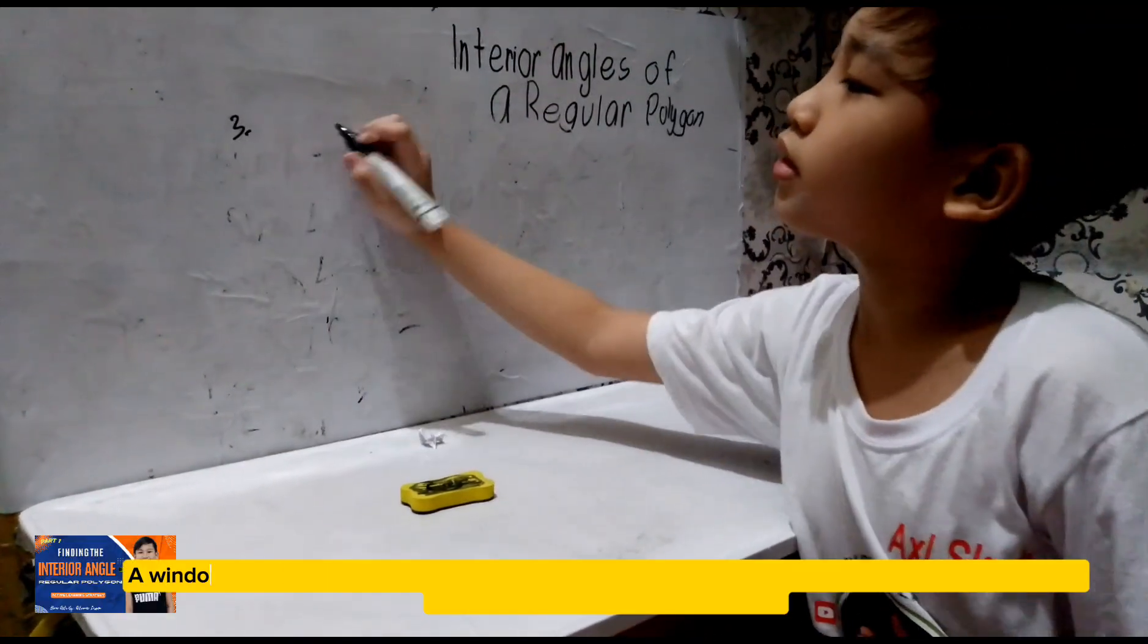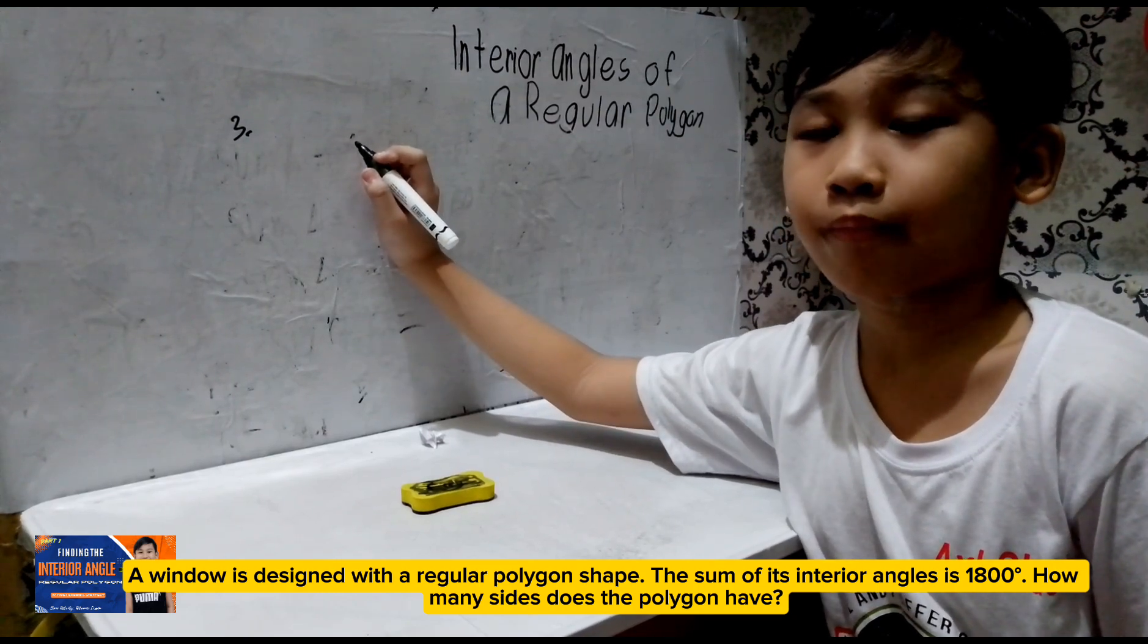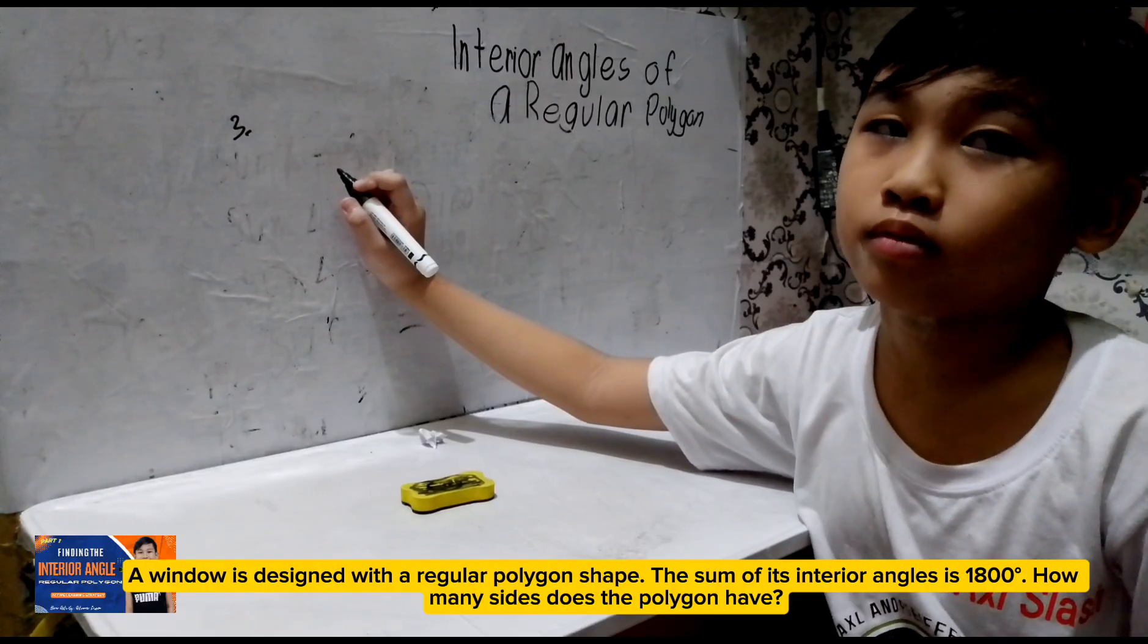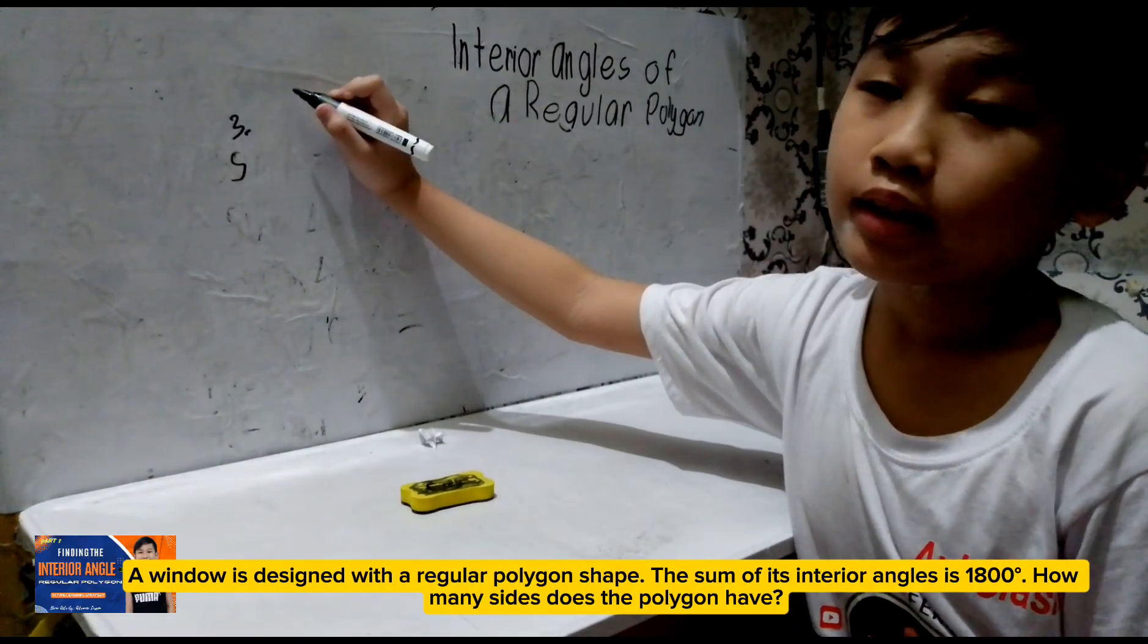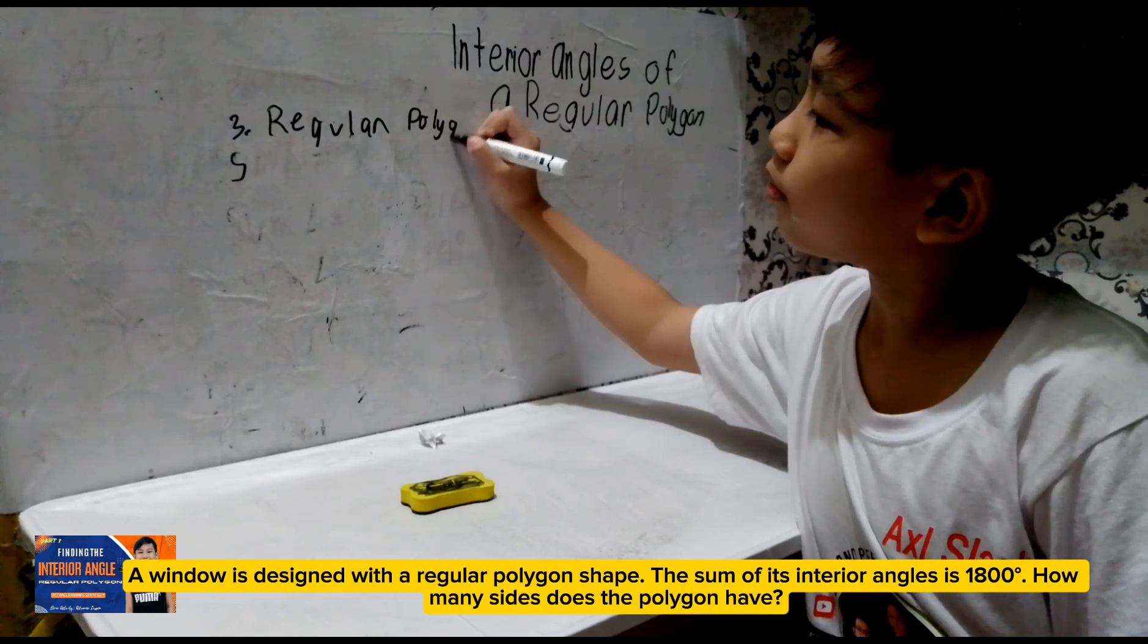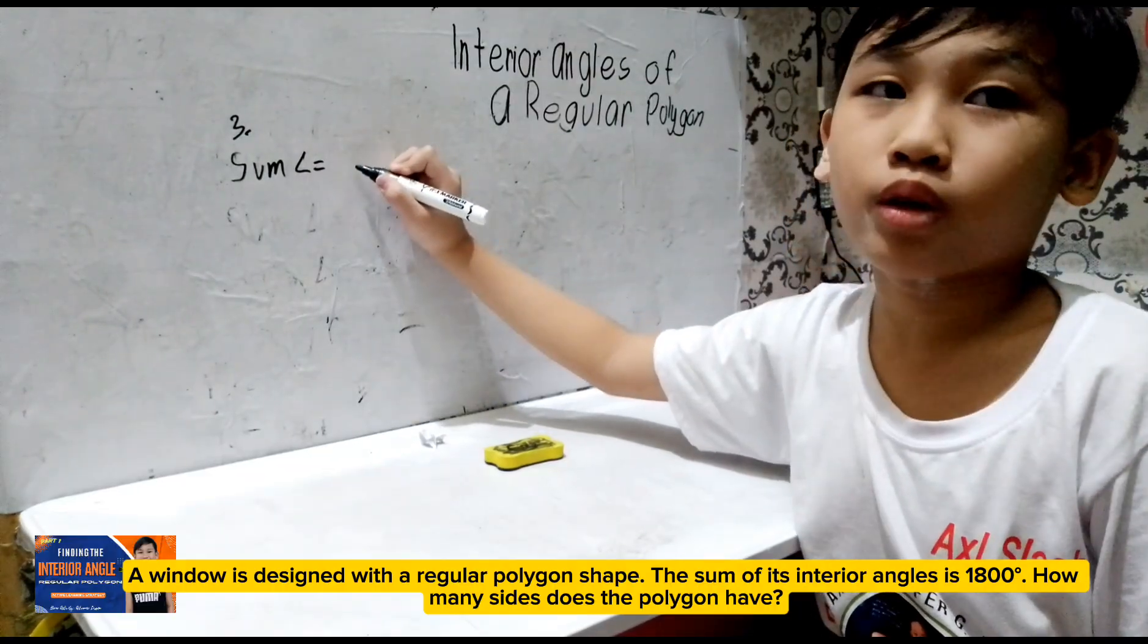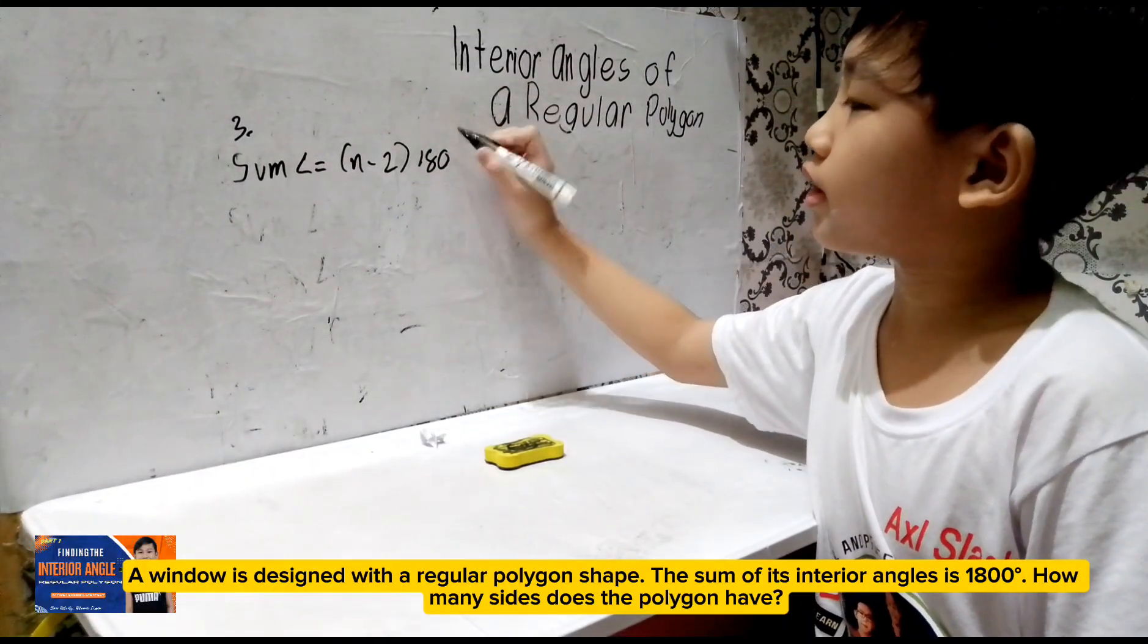So, number 3, a window is designed with a regular polygon shape. The sum of the interior angles is 1,800 degrees. How many sides does the polygon have? So, you are asked, you are given with a total measurement of the angle. And then you are asked to find how many sides does a polygon have? You are asked to find the side. So, what formula? The sum of angles. So, we don't have N because mommy said it's a regular polygon. So, we don't know if it's square, triangle, any of regular polygons. So, but you are given with a total measurement which is 1,800 degrees.